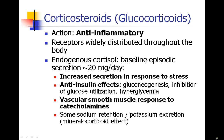We're going to start by talking about steroids, specifically corticosteroids, also known as glucocorticoids. These are steroids that are generally synthesized in your adrenal gland, in your adrenal cortex. They are anti-inflammatory hormones, and the receptors for these steroids are widely distributed throughout your body.